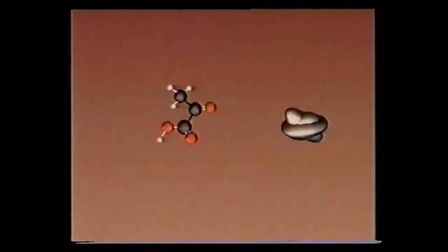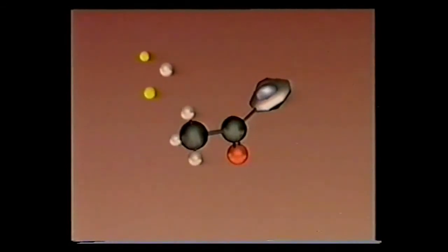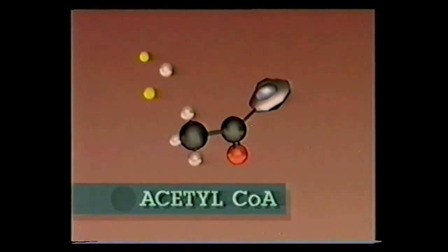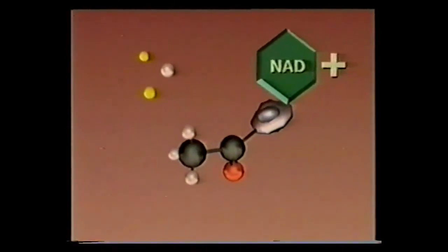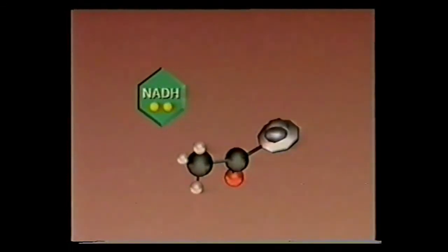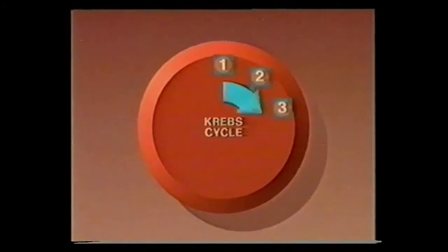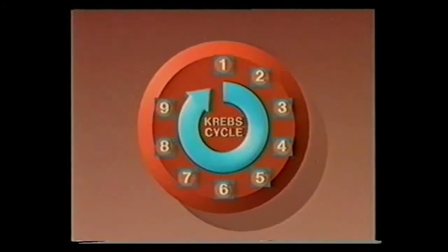As pyruvate encounters coenzyme A, the complex kicks out two electrons, a hydrogen atom, and carbon dioxide to form the acceptable two-carbon acetyl coenzyme A. The electrons and hydrogen are picked up by NAD⁺, forming NADH — an intermediate energy carrier. But it's the two-carbon acetyl-CoA that we keep an eye on. Now let's take a simplified look at the Krebs cycle.